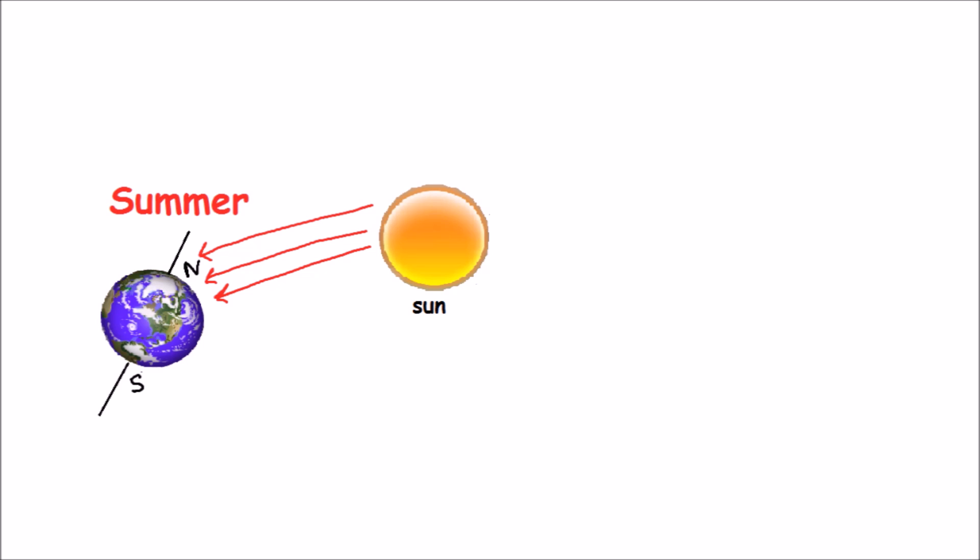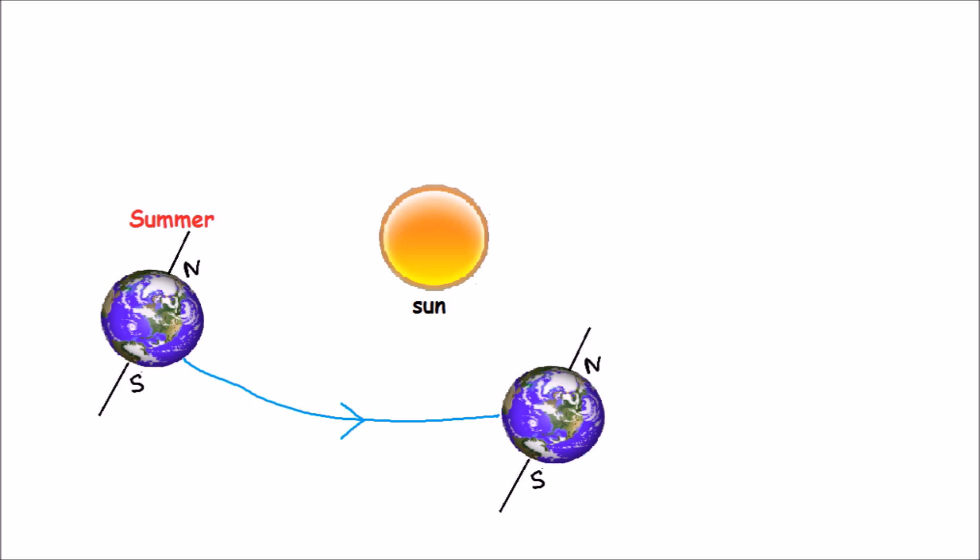The part of Earth that tilts towards the Sun gets more heat and light; it is summer in this part of Earth. When the top part of Earth begins to tilt away from the Sun, it is fall. In the part that tilts away from the Sun, it is winter.